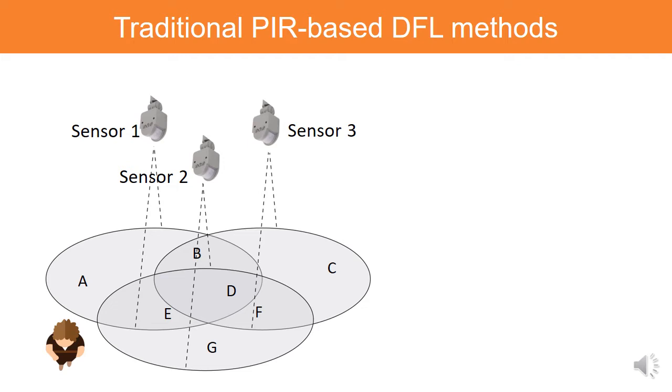The basic idea of traditional PIR-based localization system is simple. For example, when a person moves into Area E, Sensor 1 and Sensor 2 will be triggered. Then, when a person moves into Area D, all of these three sensors will be triggered.